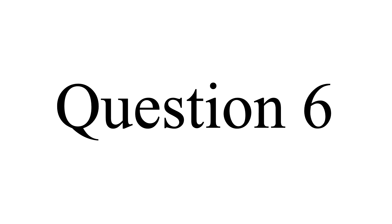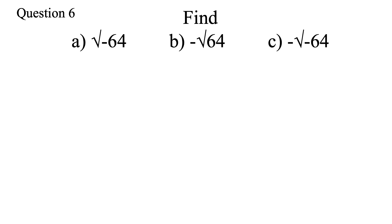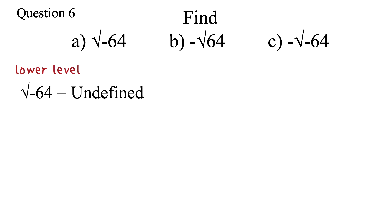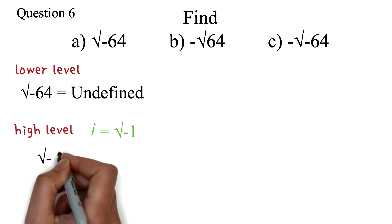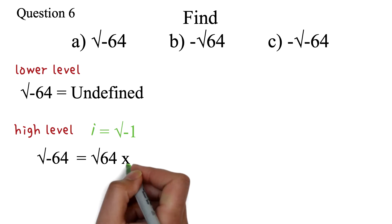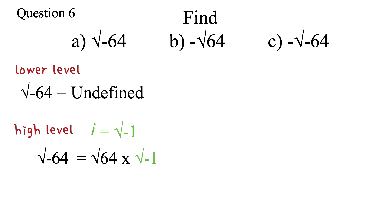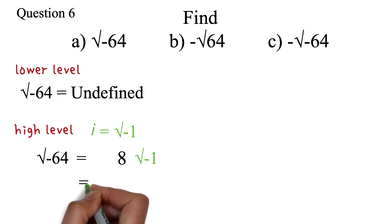Now let's look at negatives and square roots. Question 6a: find the square root of negative 64. You cannot find the square root of a negative number, so in lower level math, the square root of negative 64 is undefined. For higher level math, we introduce the letter i, where i is the square root of negative 1. The square root of negative 64 can be written as the square root of 64 times the square root of negative 1. We find the square root of 64, which is 8, giving us 8√(−1). Since √(−1) = i, our answer is 8i.